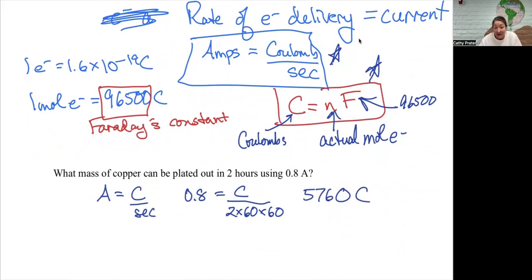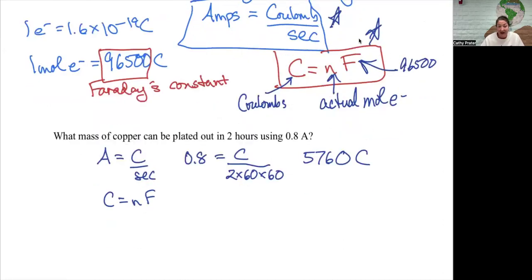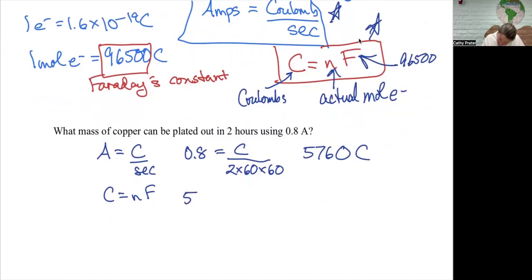Next I want to figure out how many electrons that is. C equals NF. 5760 is going to equal the moles of electrons times Faraday's constant. So dividing this number by 96,500 gives me N, which is 0.0597 moles of electrons.